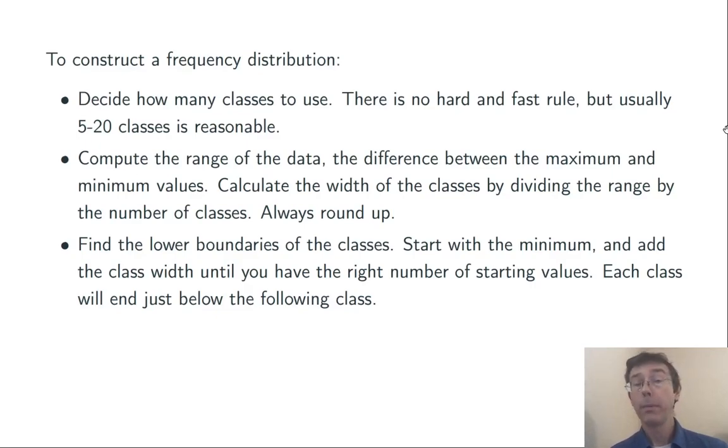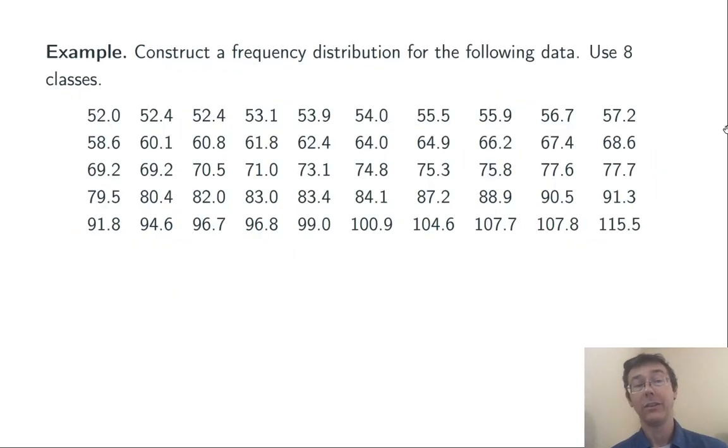Then, find the lower boundaries for the classes. Start with the minimum to get the first lower boundary, then add the class width to get the lower boundary of the second class, and so on. Each class is going to end just below the next class. Finally, go through and count how many observations fall into each class.